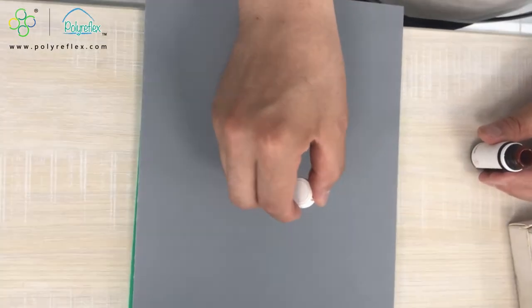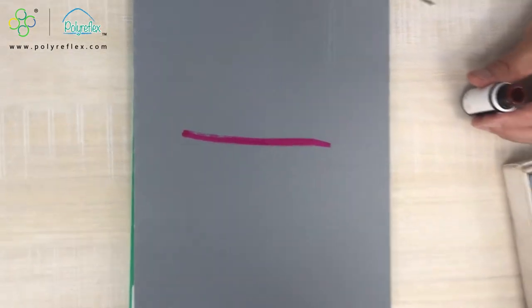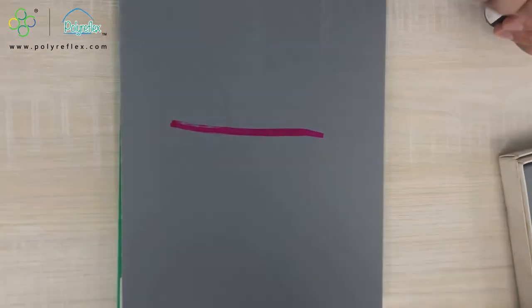Then we test the other side of it in the same way. The results show that both sides of this PP honeycomb panel have been Corona treated.